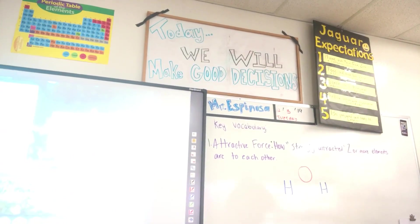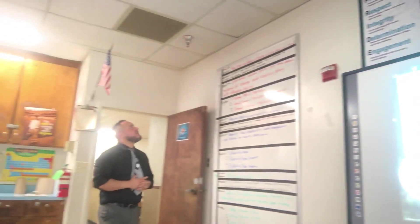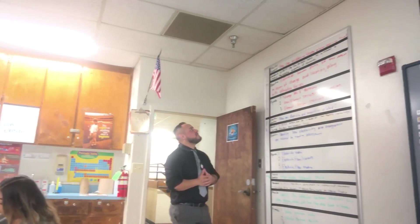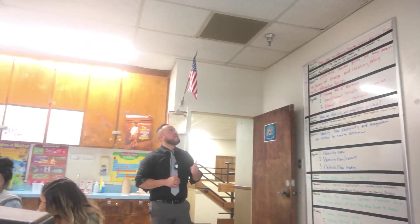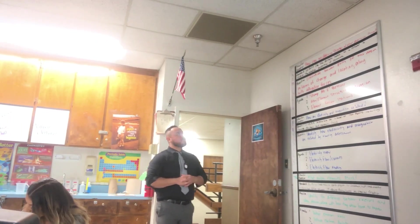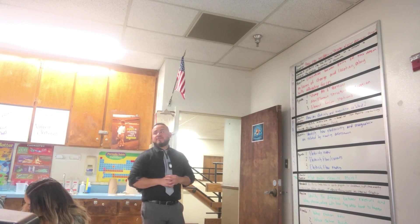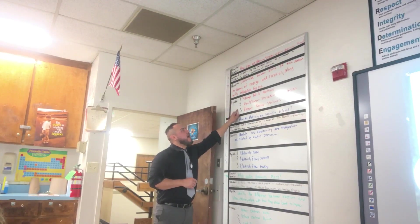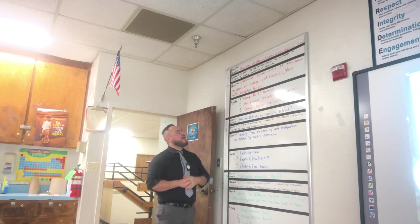So today is December the 3rd. Let's make sure we write down our agenda. Our essential question is: how can the structure of an atom determine its properties? Our objective is we're going to be able to differentiate between parts of an atom in terms of charge and location, along with attractive forces. That's our key word for today. We're going to start off with a Stop Mr. E question, atom element structure discussion, and then we're going to do an element review station. Make sure we are writing down our agenda for today.